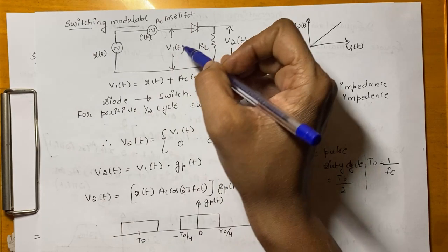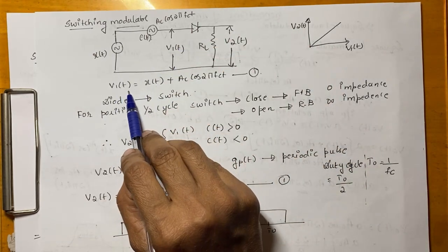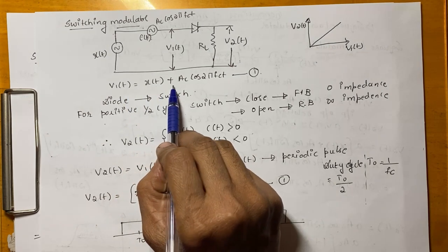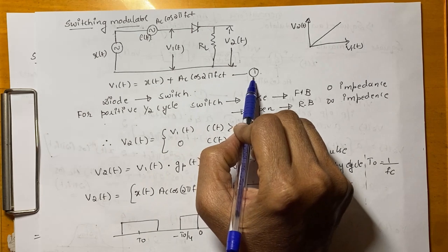This signal is called V1(t). Now, we can represent V1(t) as V1(t) = X(t) + AC cos(2π FCT). Name it as equation 1.